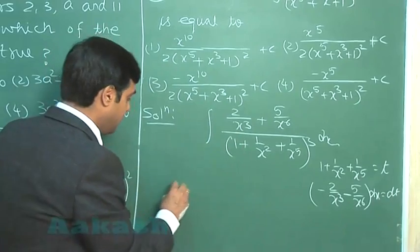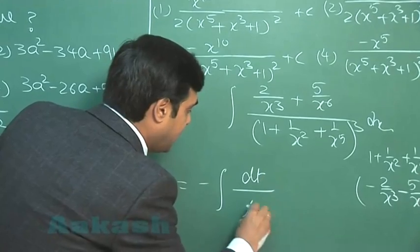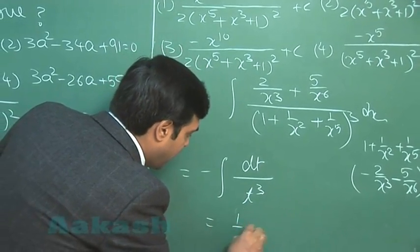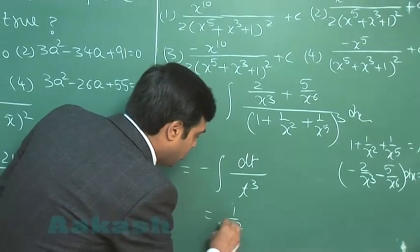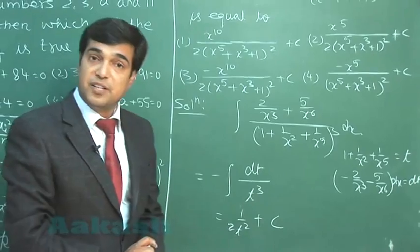So we can write here equals minus dt by t^3, giving me 1 by 2t^2 plus constant of integration. This point is clear.